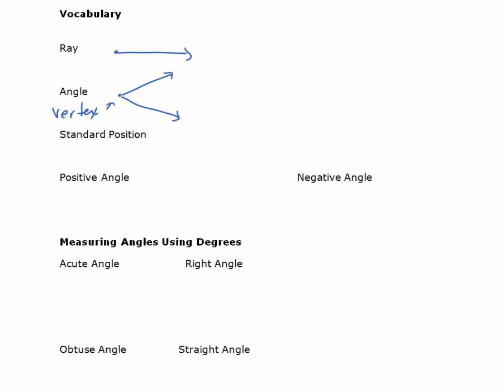Angles have an initial side. If we started our angle here and we rotated, this would be considered the terminal side. We could draw another angle where this is the initial side and we'd rotate this way.